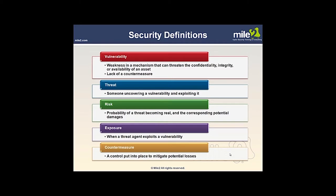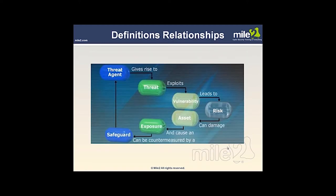Exposure occurs when the threat agent — the hacker — exploits the vulnerability. A countermeasure is something you put in place to mitigate or reduce potential losses. We put antivirus on computers as a countermeasure — a control — to reduce the likelihood of being harmed by a virus, Trojan horse, or other malware. These definitions all tie together, and while we can't avoid every vulnerability, we do vulnerability assessments to see what we have and try to address threats as long as it's cost effective.